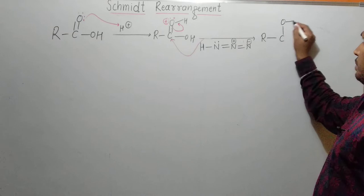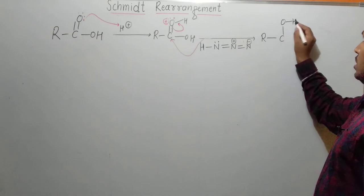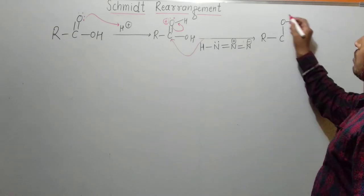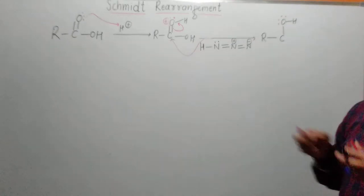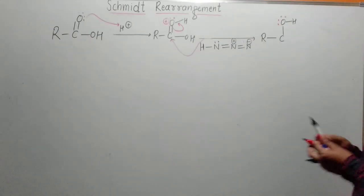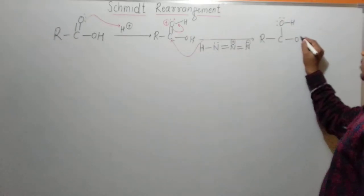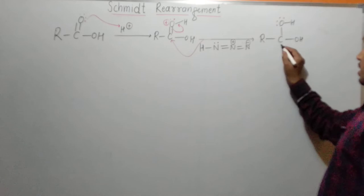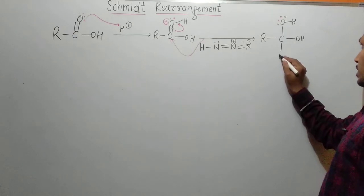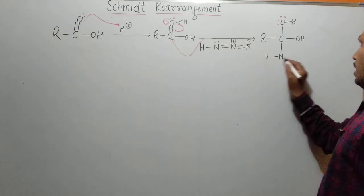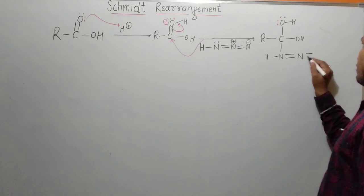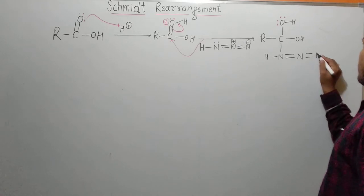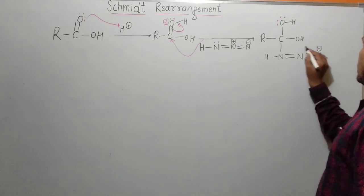In this new intermediate, we have O-H on this side — the oxygen got its electron pair back, meaning its positive charge became neutral. On the other side we have O-H, and here we have N₃H attached. In this intermediate, there is a negative charge here and a positive charge here.